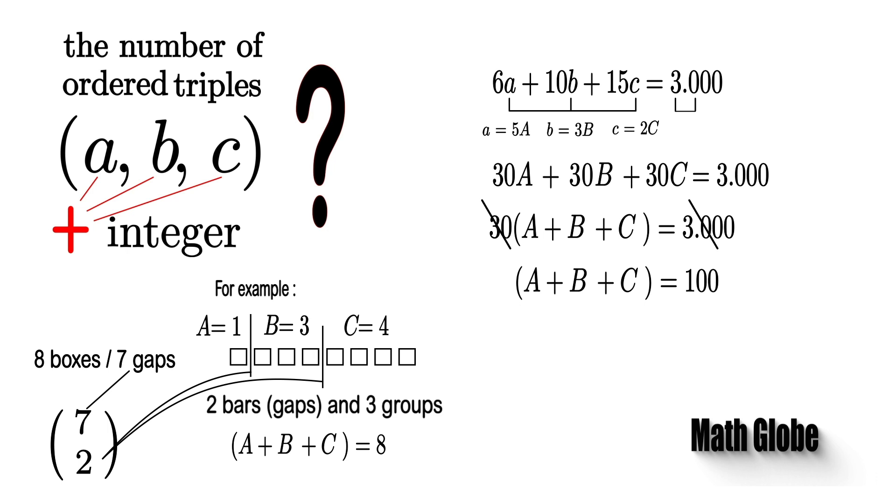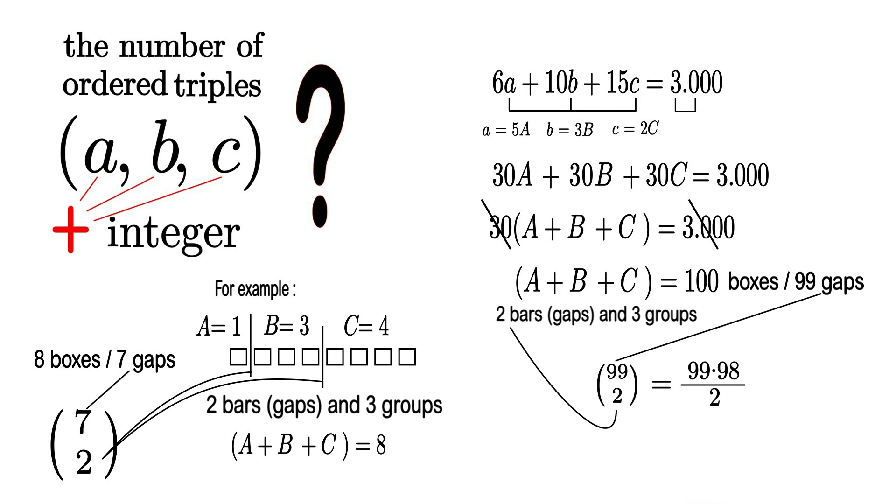Next, if we return to the main expression, in a group of 100 boxes, there will be 99 gaps. And due to 3 unknowns, the expression will be solved with 2 separators. From this, the solution will be equal to picking 2 gaps from a group of 99. And here, we will calculate 4851 as a solution.